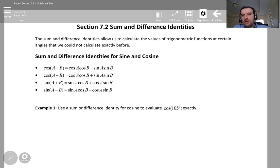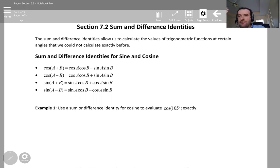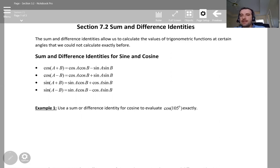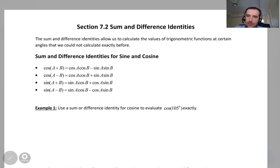In this section we are going to learn how to find, for example, sine of 30 plus 45. Until now we only studied sine of 30 or sine of 45, but of course there may be instances where we need to find sine of 30 plus 45, and in general what is sine of a plus b, cosine of a plus b, or a minus b. So in this section we are going to learn these identities. This is section 7.2.